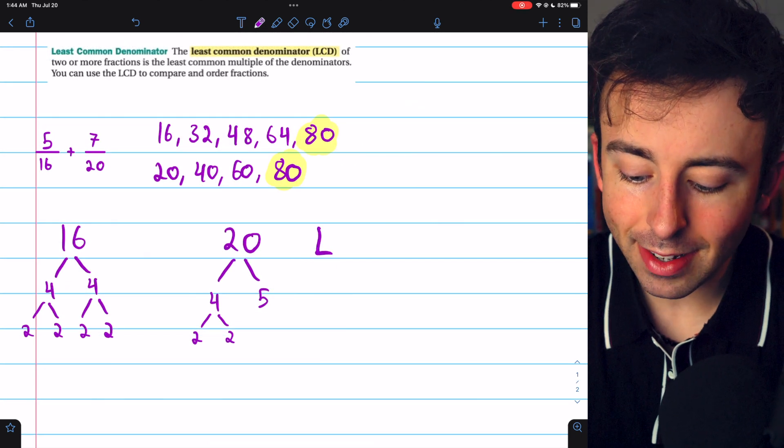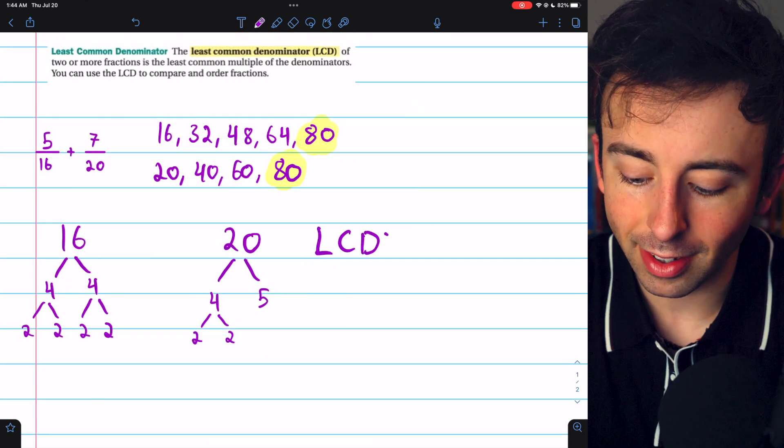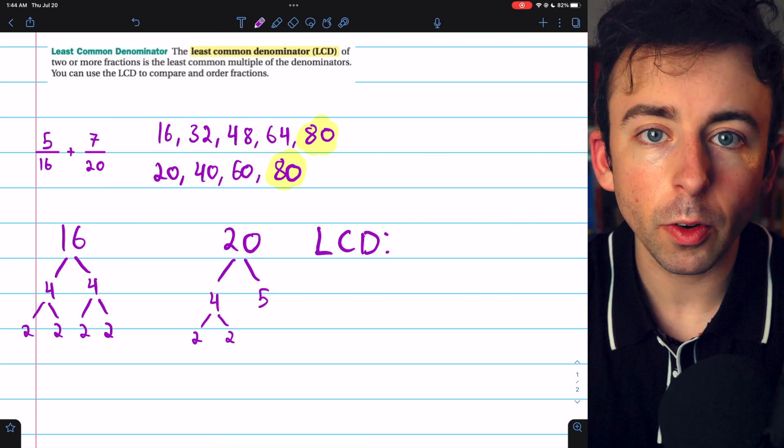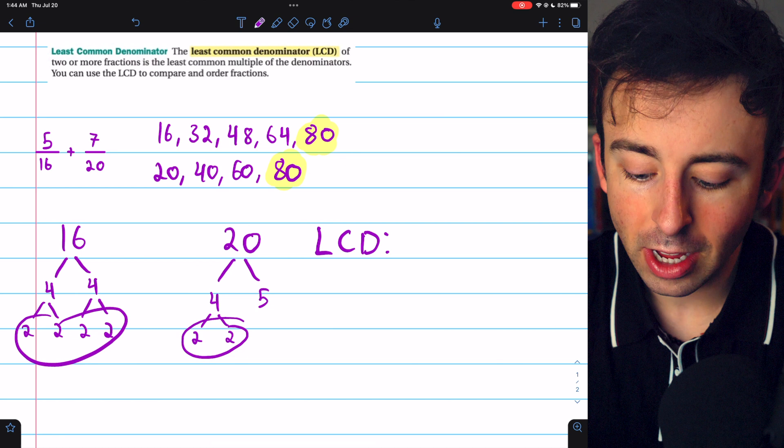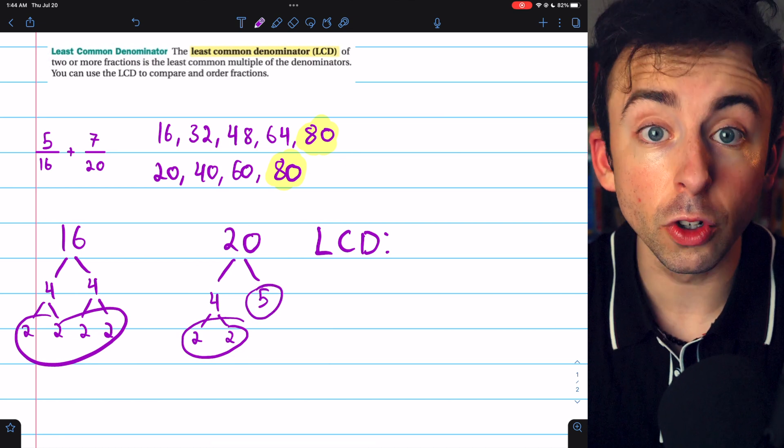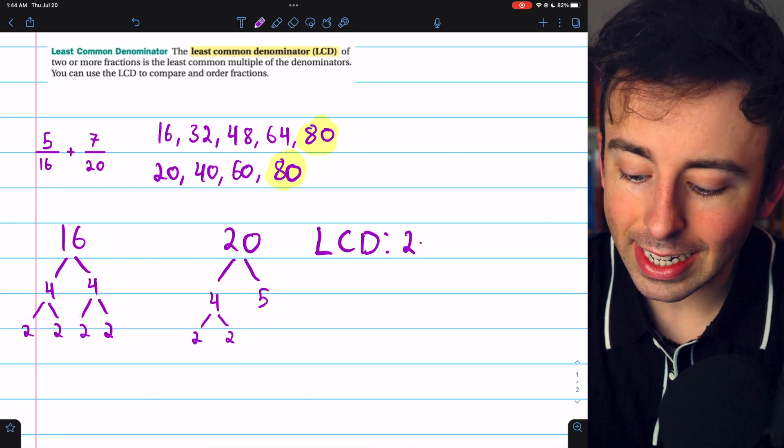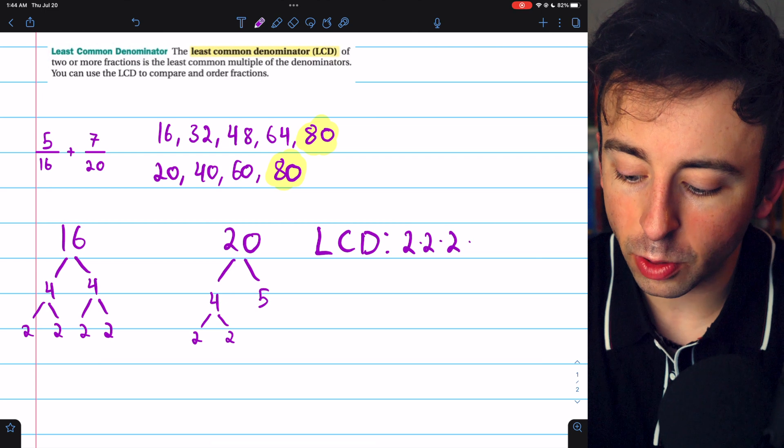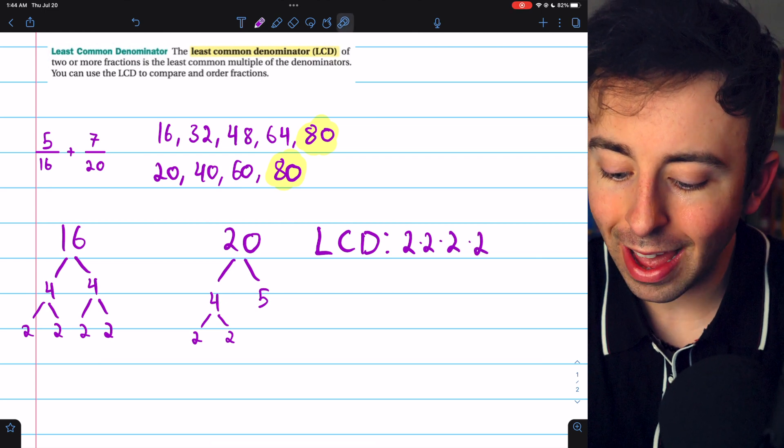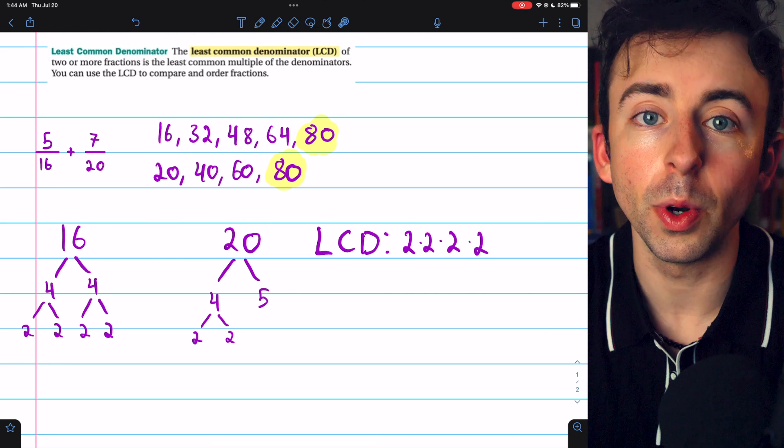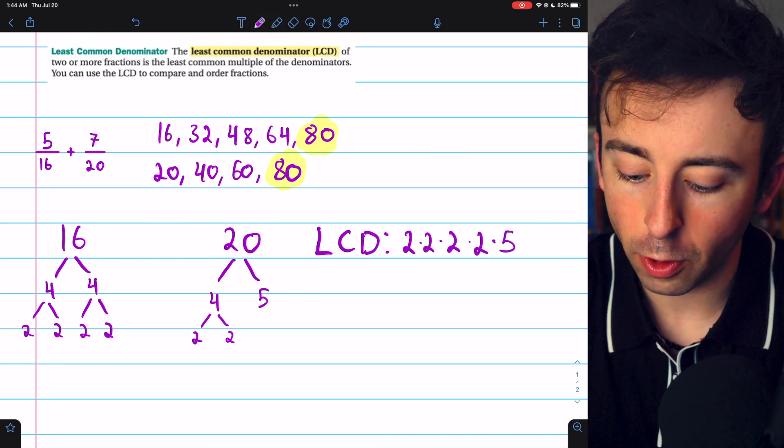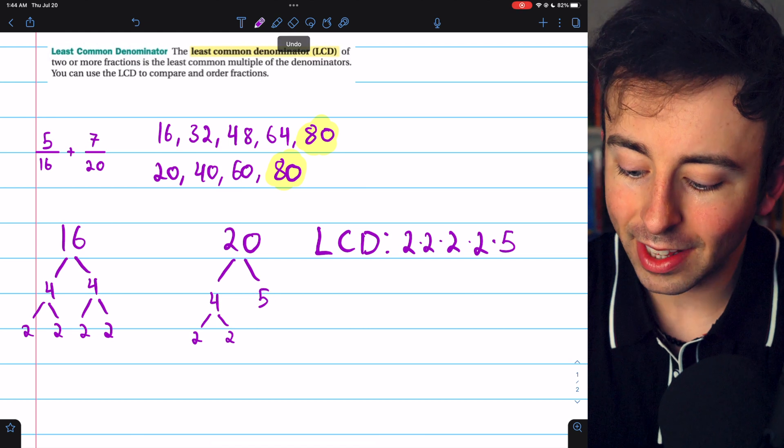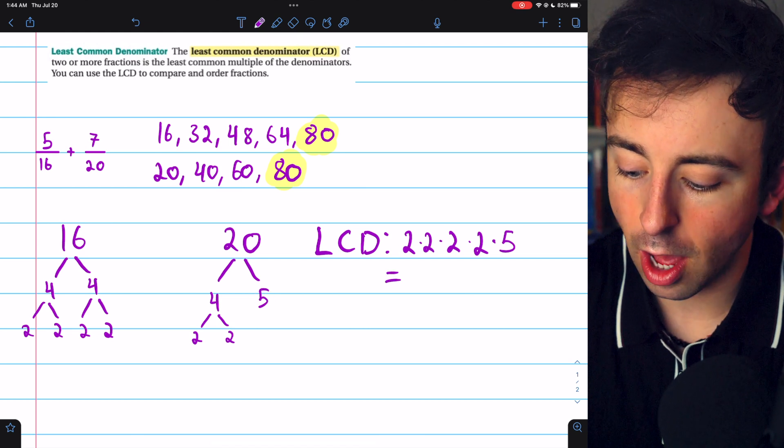Then, as before, to find the least common multiple, which in this case is the least common denominator, we just multiply together the prime factors of these numbers. Just don't include duplicates. So 16 has 4 factors of 2. We need all of those, but that also covers the 2 factors of 2 that 20 has. So the only other thing we need is the factor of 5 that 20 has, and this is going to be our least common denominator.